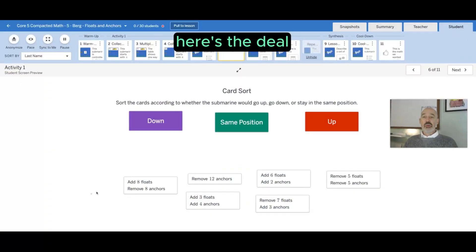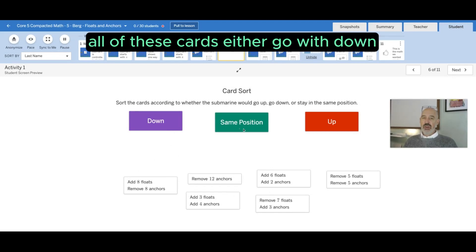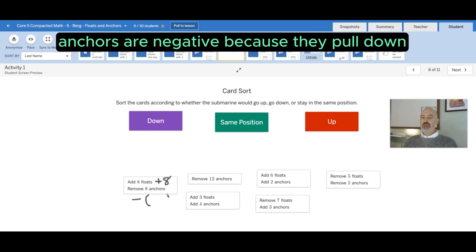Okay, here's the deal. When you work on this problem, all these cards either go with down, same position, or up. So if you add eight floats, that's going up eight. If you remove eight anchors, removing this attraction—anchors are negative because they pull down—so removing eight anchors is the same thing as adding eight floats.